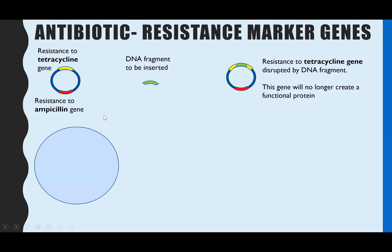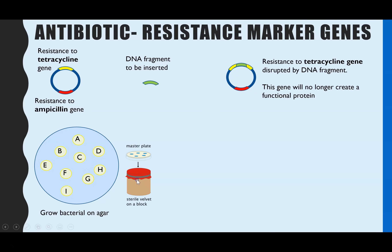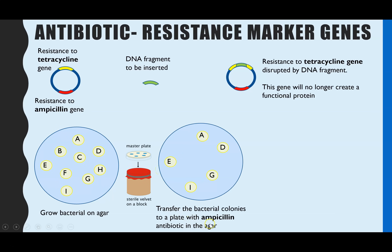So next, we grow the bacteria - first of all just on agar - and what's demonstrated here is all the different individual colonies that grew on the agar. The next step is we use a sterile velvet block, which you place over the front of your petri dish, and then stamp it onto a petri dish which contains agar with ampicillin antibiotic dissolved within it. We then leave it for a couple of days to see which of the original colonies can now grow.